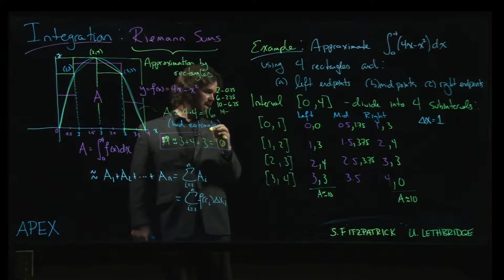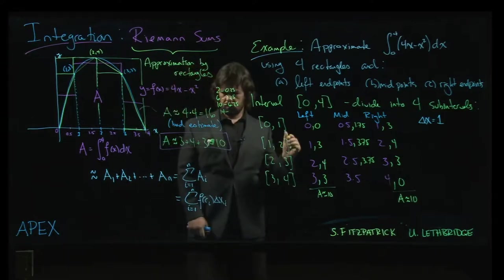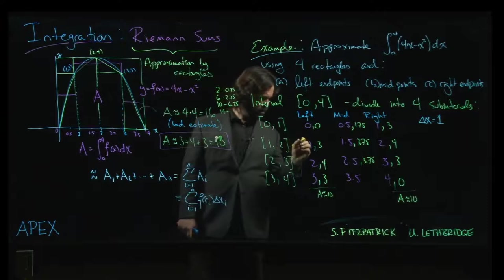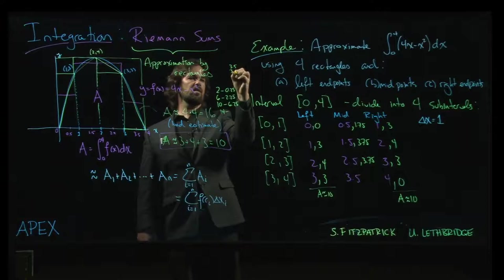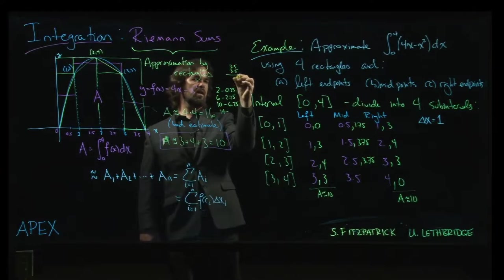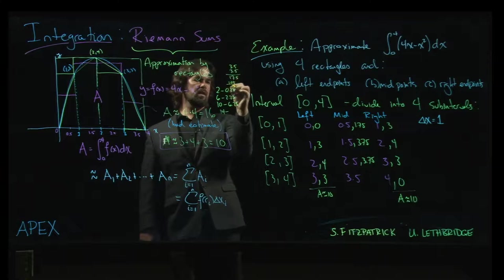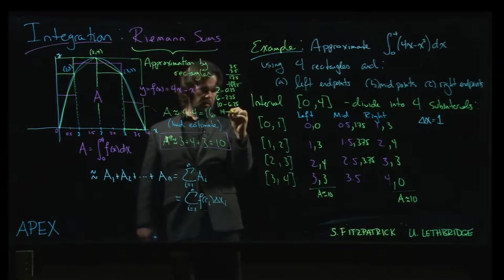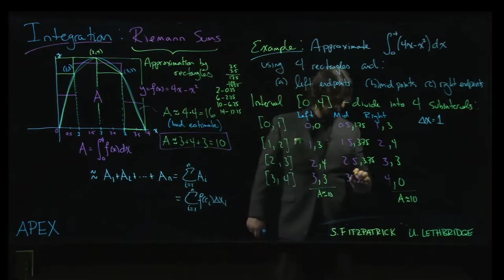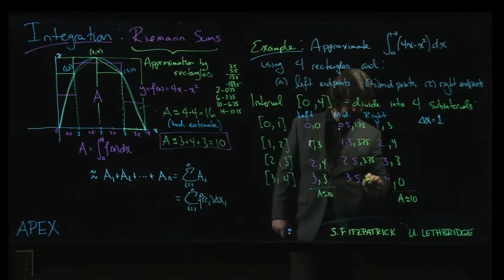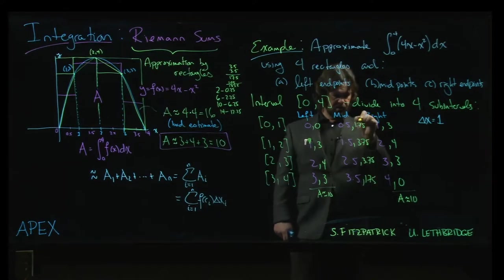Then 3.5 squared - 4 times 3.5 is 14, and when we square 3.5, let's just do it quick: 3.5 times 3.5. There we go, 12.25. So we get 1.75 again - we could guess that from the symmetry. 1.75.